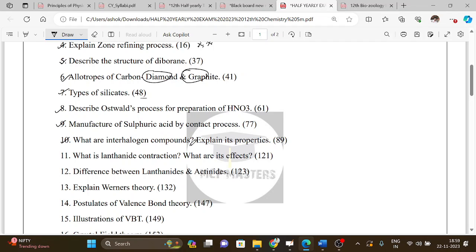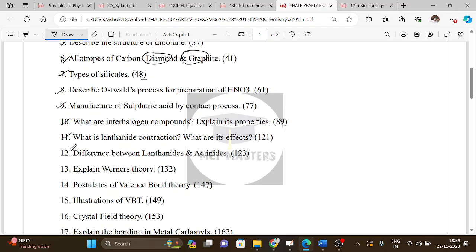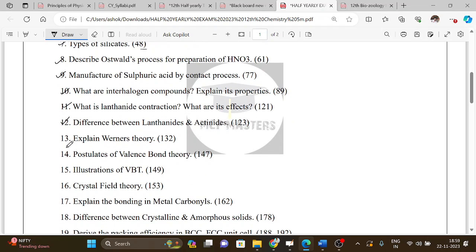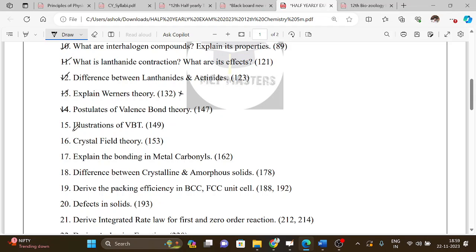Then what are interhalogen compounds, explain its properties. Then what is lanthanide contraction and what are its effects. Difference between lanthanides and actinides. Explain Werner's theory, very important question. Then postulates of valence bond theory and illustrations of valence bond theory. You can do postulates 10 points.